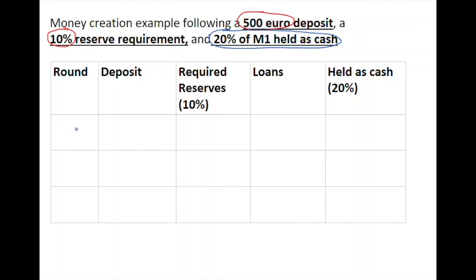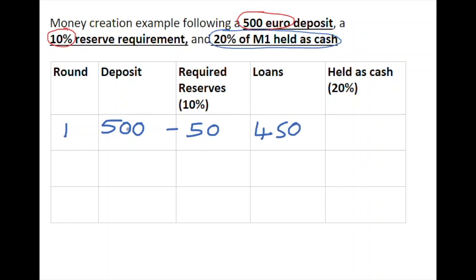In round one, there is an initial deposit of €500 in the banking system. This €500 necessitates that 10% must be kept in reserve as a required reserve, meaning €50 is held as cash inside the banking system. Potentially the difference between these two figures — €450 — can be loaned out into the economy, so a new loan of €450 is created from an initial deposit of €500.